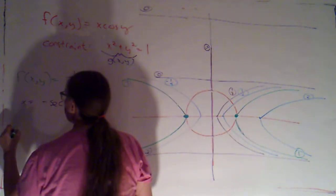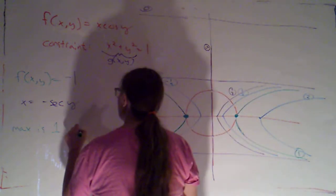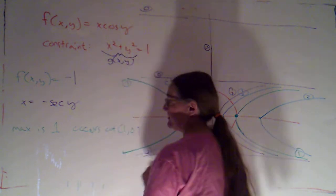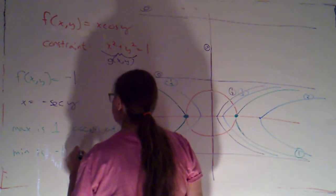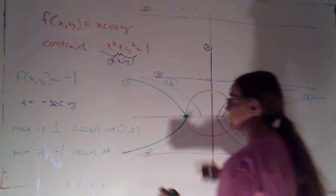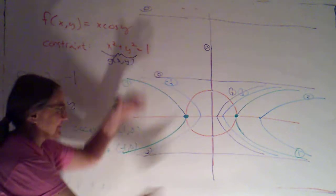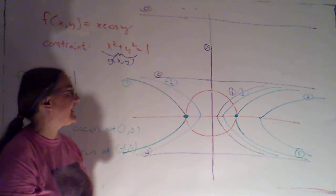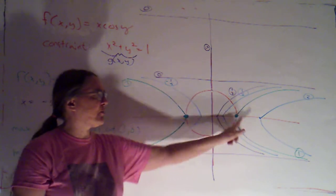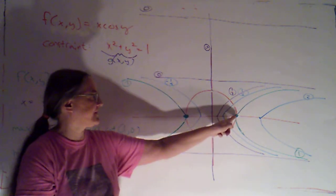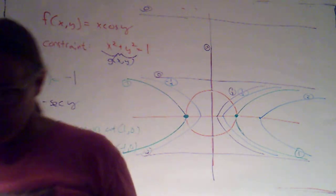Based on that analysis, the points where level curves for F touch but don't cross the constraint are the locations of the max and min. The max is one, occurring at (1, 0). The min is negative one, occurring at (−1, 0) on the unit circle. As a general rule, I'm not going to expect you to draw contour plots until you happen upon the correct max or min. In the next video, we'll talk about how to algebraically describe the condition of touching but not crossing a level curve at the max and min — and that'll help us develop the technique of Lagrange multipliers.